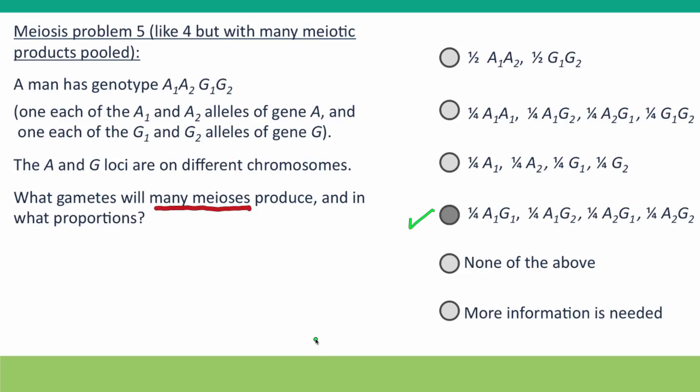Because we have many meioses, we can be confident that about half the time a meiosis is going to produce two gametes with genotype A₁G₁ and two gametes with genotype A₂G₂, and the other half of the time it's going to produce gametes A₁G₂ and A₂G₁.